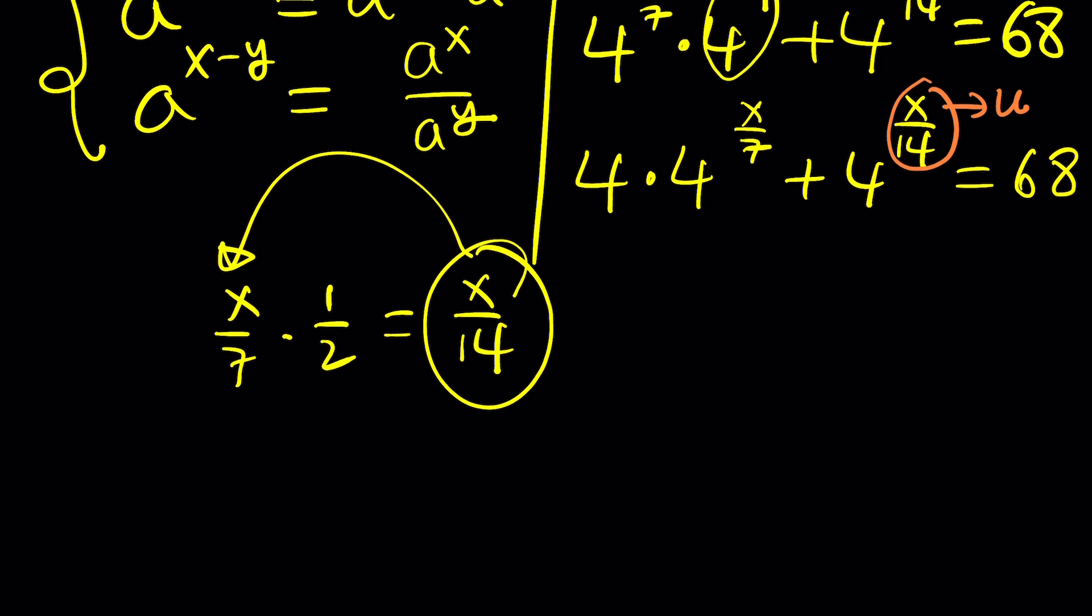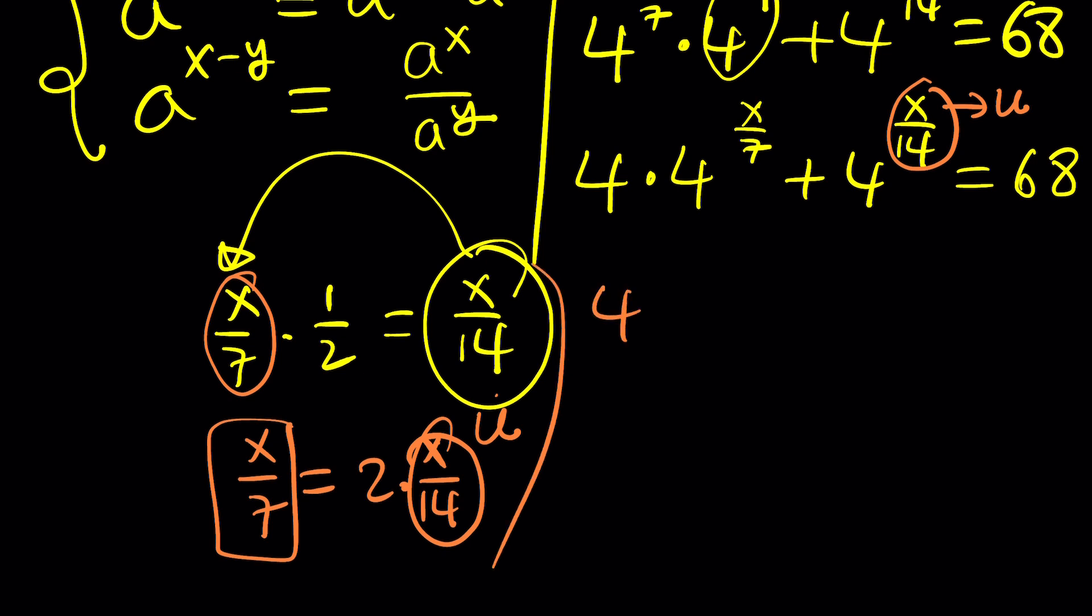Now, so what would make sense then? Take the smaller one and call it something. How about calling this u? Okay great. We can do that, and if this is u then this will be 2 times u. Why? Because if you multiply both sides by 2 here you basically get another identity, this one, and since you call this u, this became 2u, and that's really cool. That's something that I've been expecting.